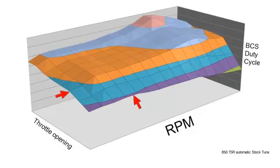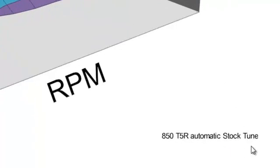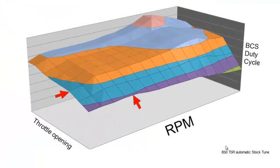Alright, so let's start taking a look at boost maps. To start with, you'll see we've got an 850 T5R automatic stock tune here that we're looking at. We've got three different axes, so let's review what each one is.